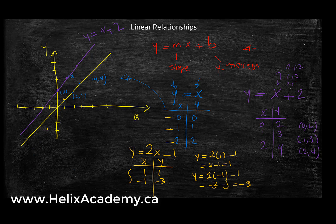Here's my third line: y equals 2x minus 1. So a linear relationship is the relationship between all the x and y values of the points on the line.